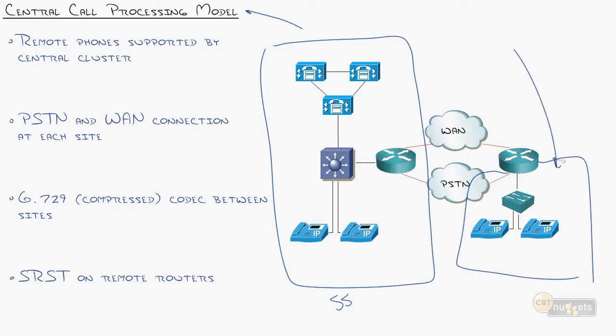That's still not enough to justify putting a full call manager deployment there. This is expensive, not to down on Cisco, but they make a pricey product. So you don't want to start throwing call manager clusters everywhere unless you got the cash to do that. In this environment, the remote phones are supported by the central cluster. These guys don't have a call manager, they actually go over the WAN and register to that cluster right there.